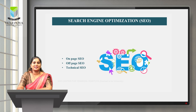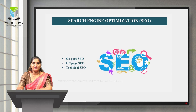Off-page SEO focuses on generating external attention through online communities and external publishers. By earning backlinks, you can move your website up on the relevant SERPs. Technical SEO focuses on the back end of your website and how your pages are coded. Image compression and structured data are all forms of technical SEO that can increase your website's loading speed, an important ranking factor in the eyes of search engines like Google.